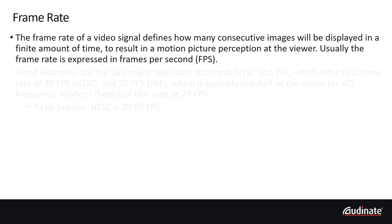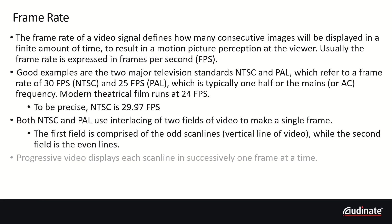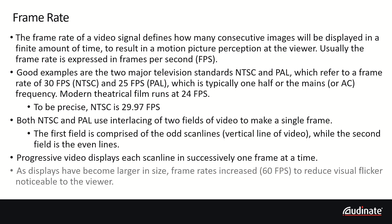Frame rate is the number of consecutive images displayed per time unit, usually in seconds, and is expressed as frames per second, or FPS. NTSC is 30 frames per second, PAL is 25 frames per second, and feature film is typically 24 frames per second.